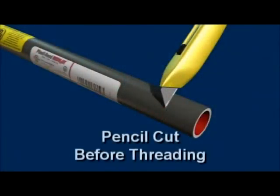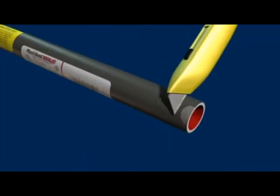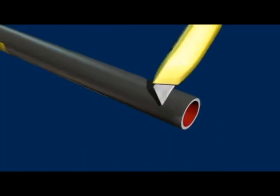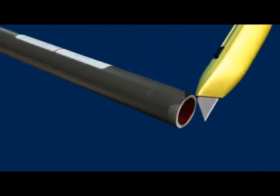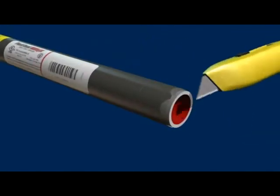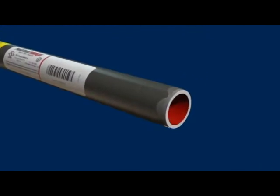Also, if conduit is to be threaded manually, it must be pencil cut before threading can occur. This will enable the die teeth on the threader to engage the conduit. In the same manner as sharpening a pencil with a knife, cut away one quarter inch of the exterior coating.